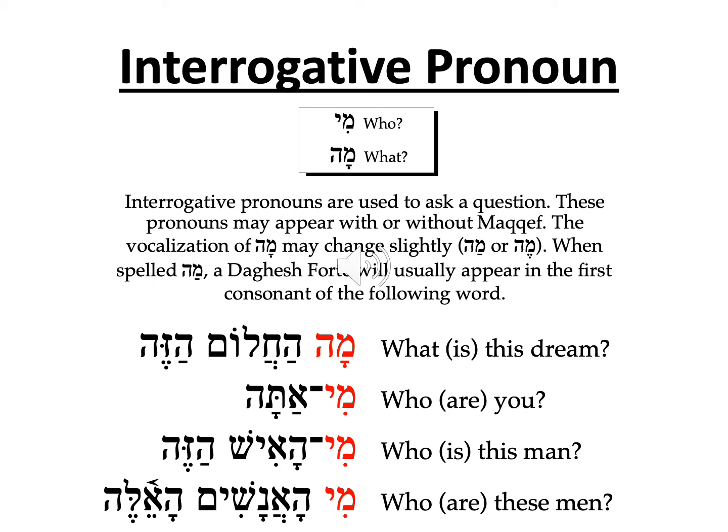Interrogatives ask a question: what or who. A good way to remember the term interrogative is to remember that these words interrogate — what, who. Like the relative pronoun, they do not attach directly to a word, only with a macaf. Note that the form of 'ma' may also be 'meh,' or 'ma' with a patah instead of a komets. Just get used to seeing mem and he. Don't worry too much about the vowels. A word that has a mem and a he before it generally will mean 'what.' Context will also tell you if you're asking a question.